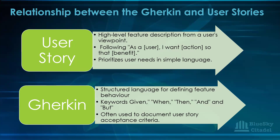Gherkin is also used to document the acceptance criteria for a user story, ensuring the feature is implemented correctly. Documentation is key — you can always refer back to it. If there's an error, there's an audit trail; you can go back and ask: did I capture the requirement properly? By outlining step-by-step, you also realize if you've missed a step, ensuring everything is properly done.